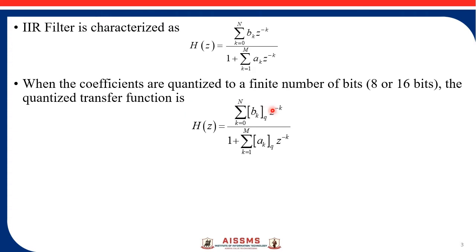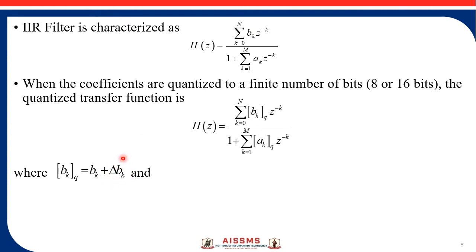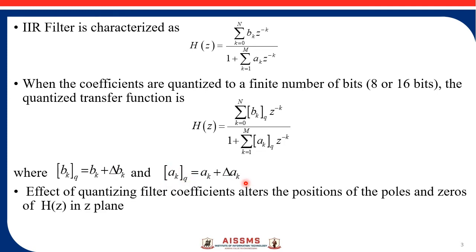It will be like this because the coefficients are getting quantized. That is why I have replaced bk with bk quantized and ak with ak quantized, where bk quantized is equal to the original bk plus the deviation or variation in that bk due to quantization, and ak quantized is again ak plus delta ak.